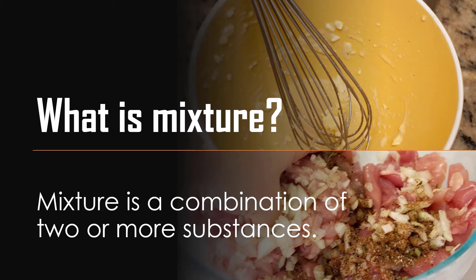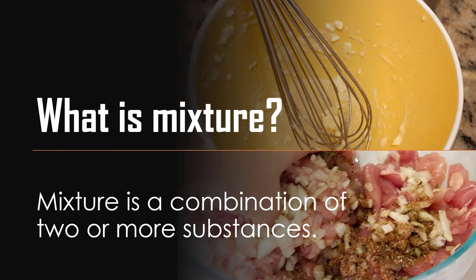What is a mixture? A mixture is a combination of two or more substances. For example, in the picture, we have a mixer with substances like meat, garlic, onions, pepper, and other materials. When we combine two or more substances, it is called a mixture. From matter, we can make a mixture.